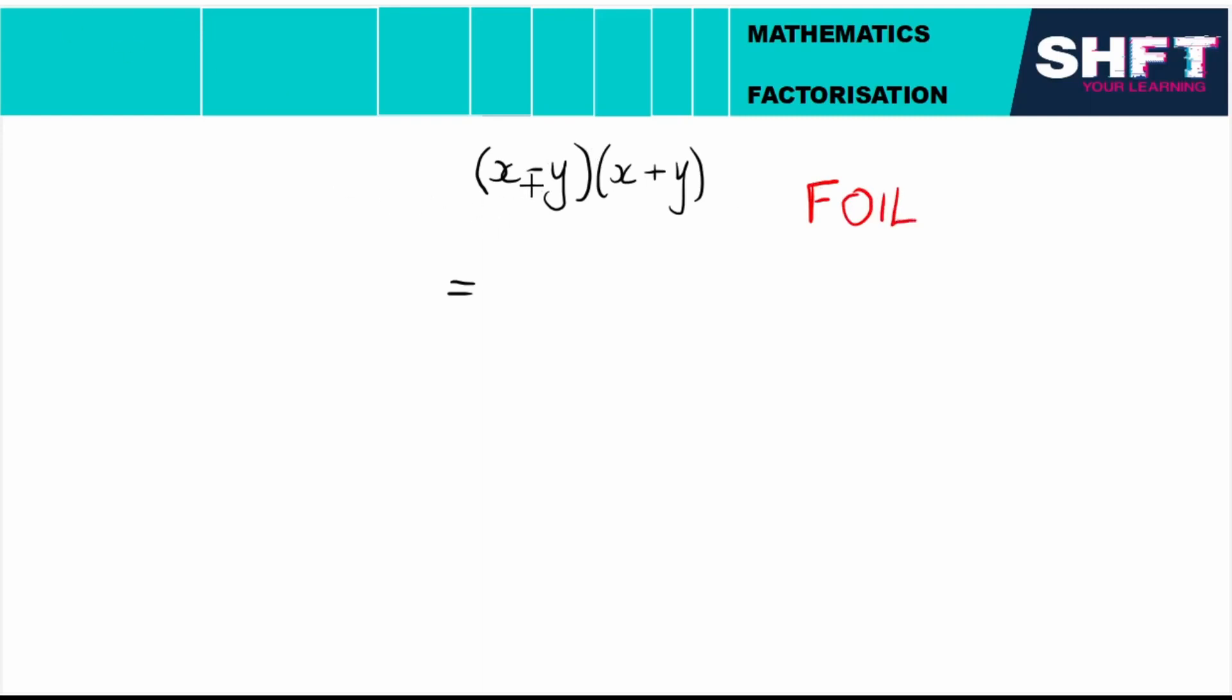That means firsts, and outer, and then inner, and lasts. One last step is I need to simplify this. We need to add the like terms which are these two middle terms, and wonderful, they add up to naught. So we're left with a final answer where both terms are squares, but also we've got the difference of both terms.